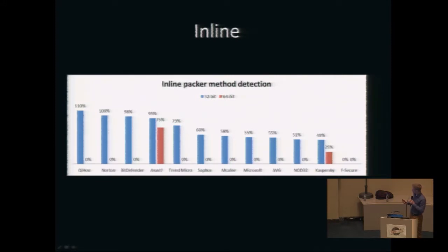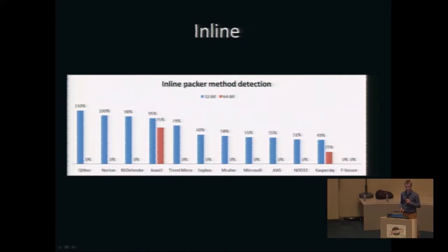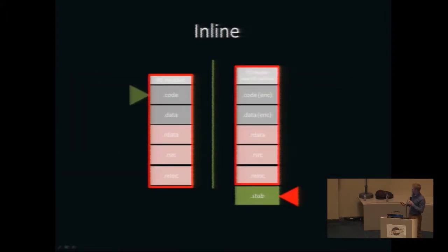Some antiviruses with high detection rates are likely detecting the fact that the stub is added as a new section and the entry point has changed. Another group is probably detecting malware via signatures in sections other than the code or data section — we only encrypt those two sections. If an antivirus extracted a signature from the resource section, for instance, it will still detect the malware.